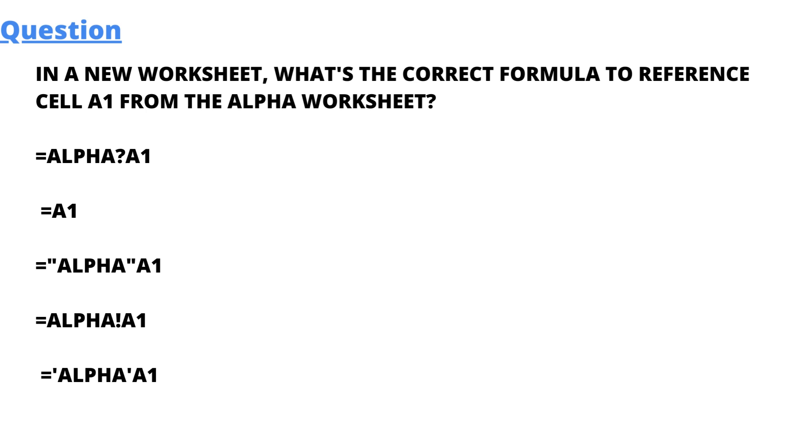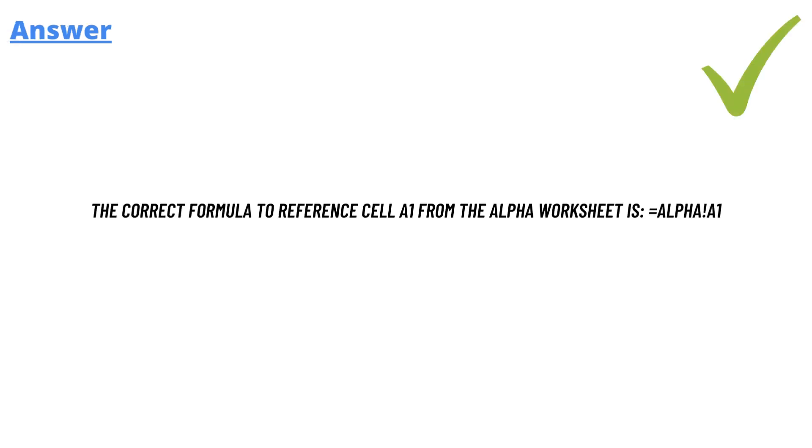That's the fourth answer. Fifth answer, sorry. The correct answer of the question is, the correct formula to reference cell A1 from the alpha worksheet is alpha, exclamation mark, A1, which is option D. This is the option D, which is correct.